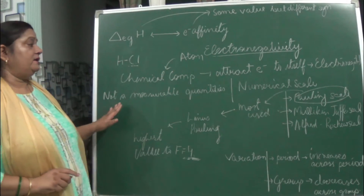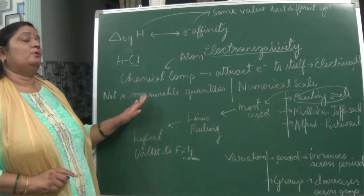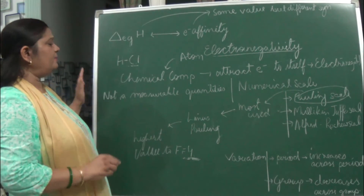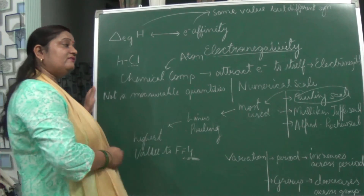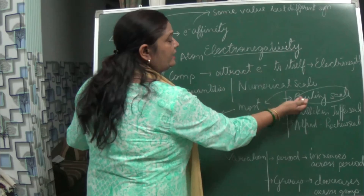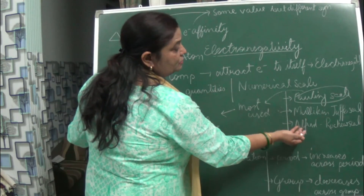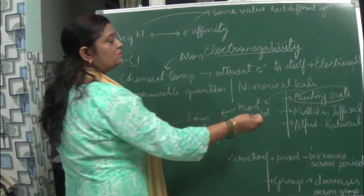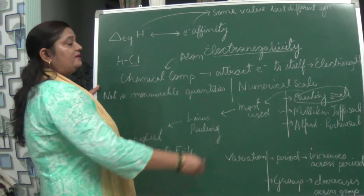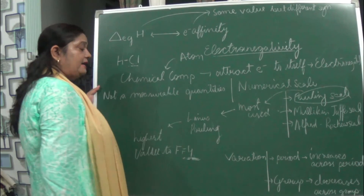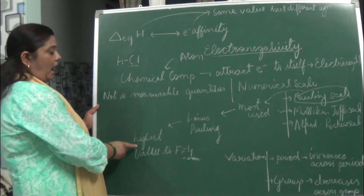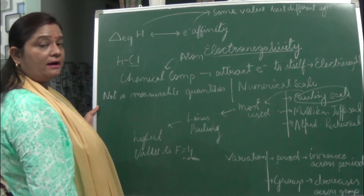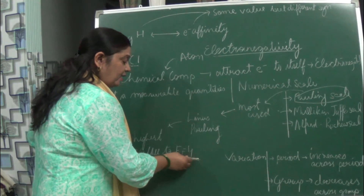Electronegativity is not a directly measurable quantity like ionization enthalpy or electron gain enthalpy. Instead, it is given on numerical scales such as the Pauling scale, Mulliken-Jaffe scale, and Alfred-Rochow scale. The most commonly used is the Pauling scale, given by Linus Pauling. On this scale, the highest value of electronegativity is assigned to fluorine, which is 4, and all other elements are compared relative to this value. Fluorine is the most electronegative element.